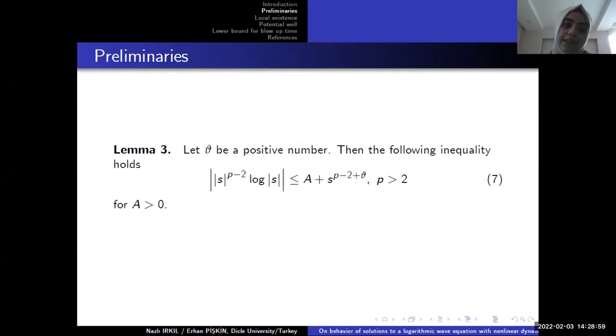The other lemma is about logarithmic source term. So our aim is to estimate the logarithmic source term and write these terms as known. So we must use lemma 3. And you can see the following in our inequality 7. We will use for the global existence and for the blow-up results these lemmas.